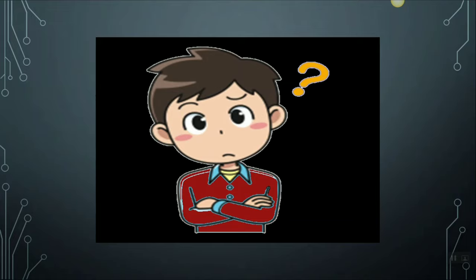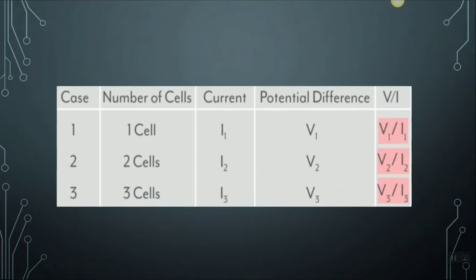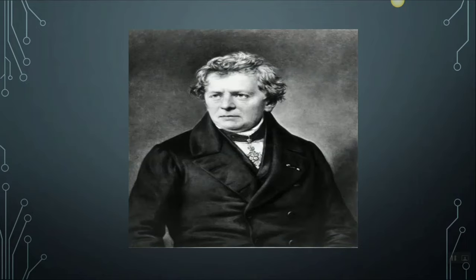But the question is, are they increasing proportionally? To know that, we add an additional column on the right which calculates the value of V over I for each case. You will notice that the potential difference upon the current in each case will approximately be equal. This tells us that the potential difference V across the ends of a wire is directly proportional to the current flowing through it. This relationship was discovered by German physicist Georg Simon Ohm in the year 1827. Note that the resistance here is constant, and we also assume that all other factors including the temperature are also constant — and this is Ohm's law.